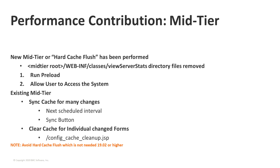How do we build cache and how do we update the cache when definitions have changed? If you're dealing with a brand-new Mid-Tier that you've just set up and want to get some cache into it, or you have an existing Mid-Tier where you did a hard cache flush — removing the view server stats in the noted directory — you would want to enable preload for the AR server, and then allow users to access the system to start building cache.